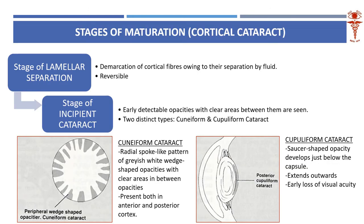Cortex — we are all very aware of what the cortex is. The cortex is the recent fibers, or the younger fibers of lens fibers, which are situated in the periphery of the lens. The center is occupied by the nucleus, the periphery is occupied by the cortex, and the capsule covers them. So this cortex can get opacified.